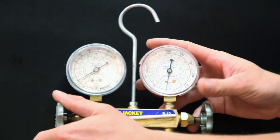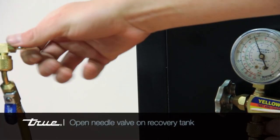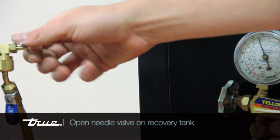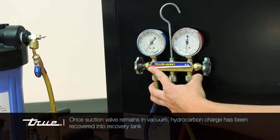Open your refrigeration gauge ports and then open the recovery tank needle valve to allow the refrigerant in the cabinet to be absorbed into the tank filter. Once the suction valve remains in vacuum, the hydrocarbon charge has been recovered into the recovery tank.